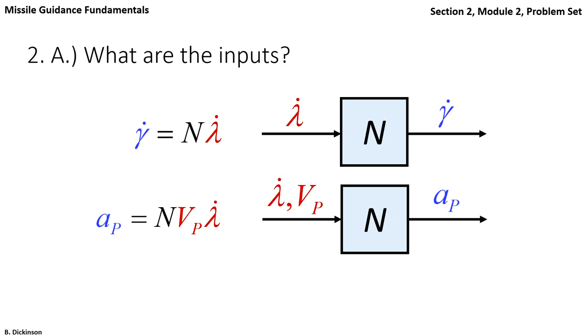A pursuer velocity changes throughout its engagement with a target. So it has to be continuously updated in time. And then it's the job of the engineer to tune the end to meet the guidance system requirements.